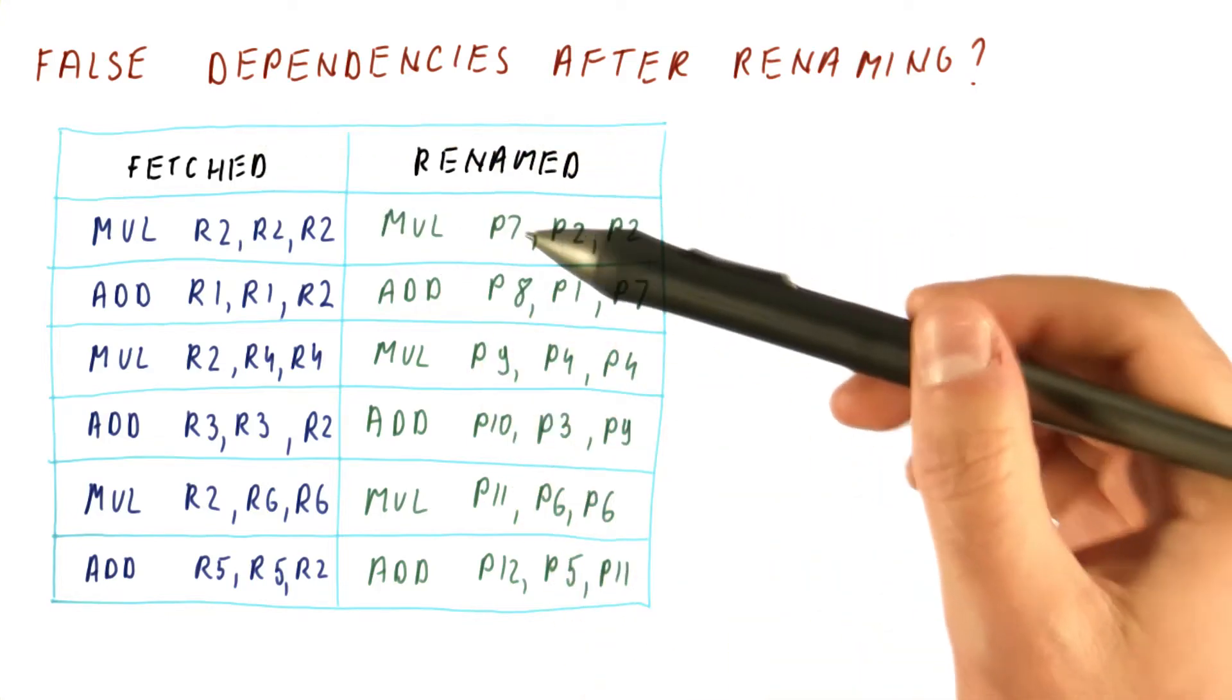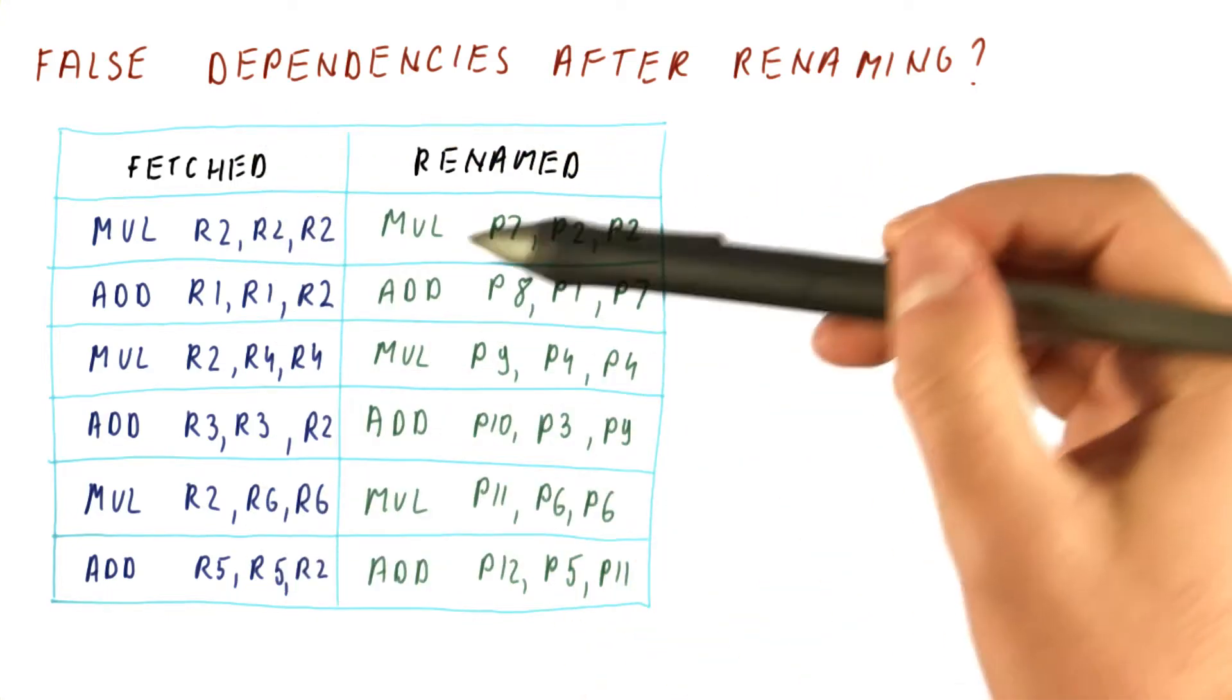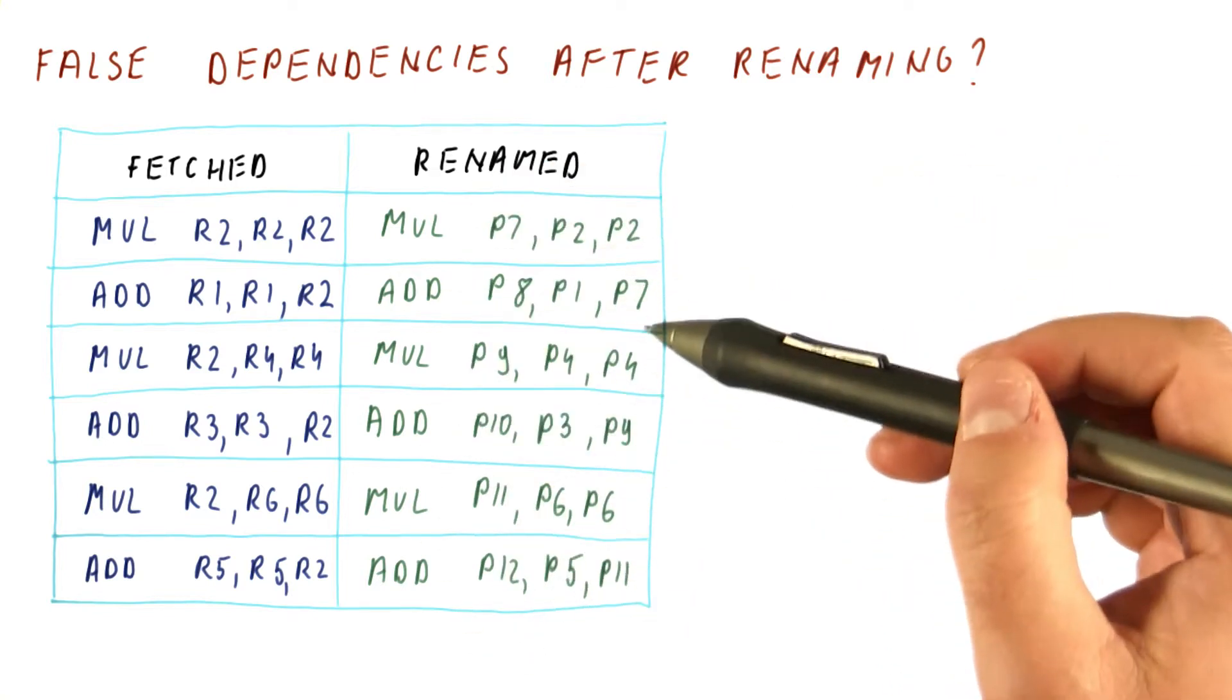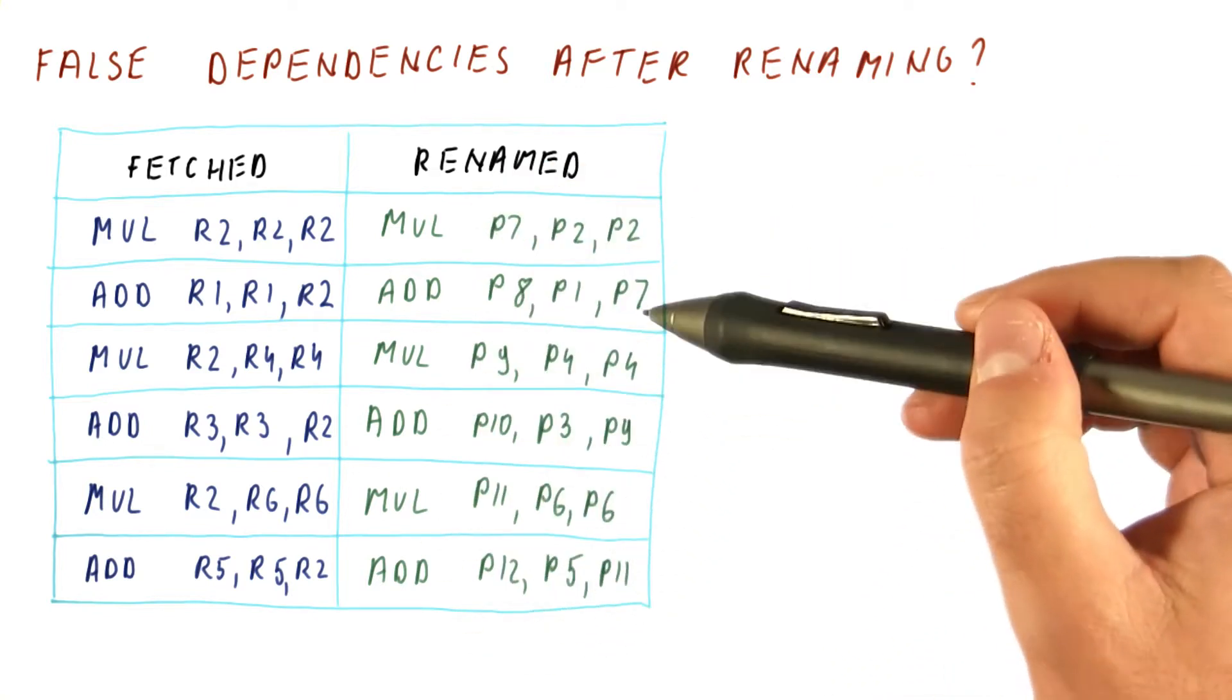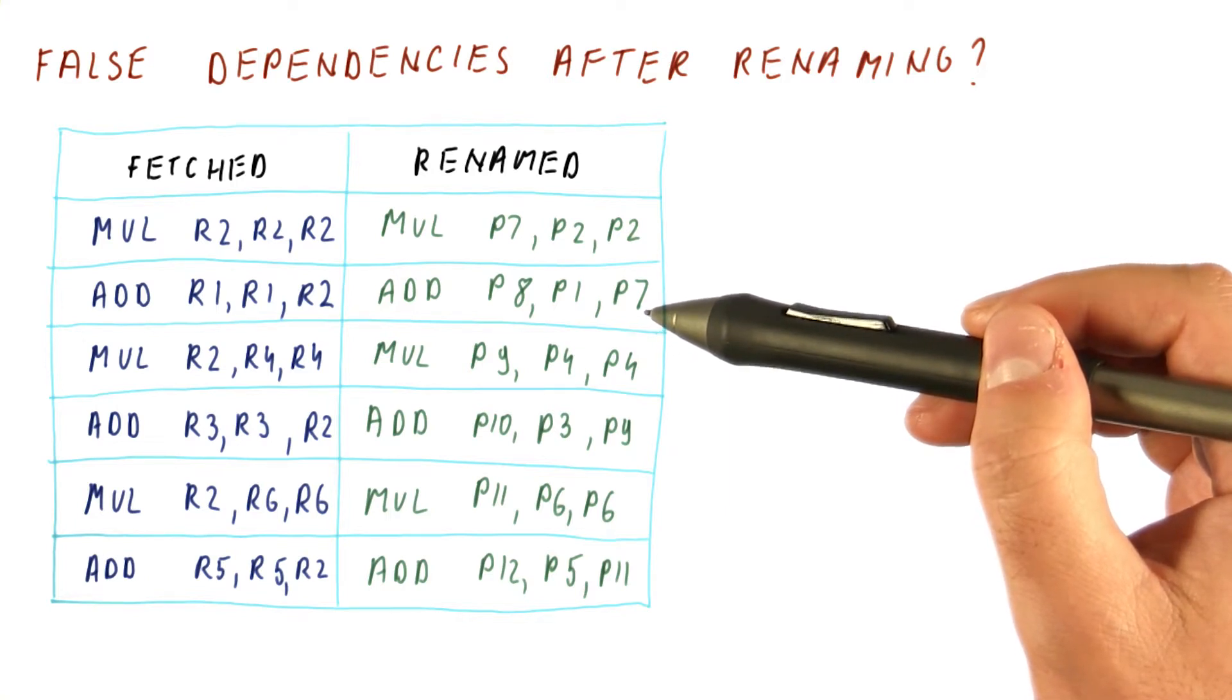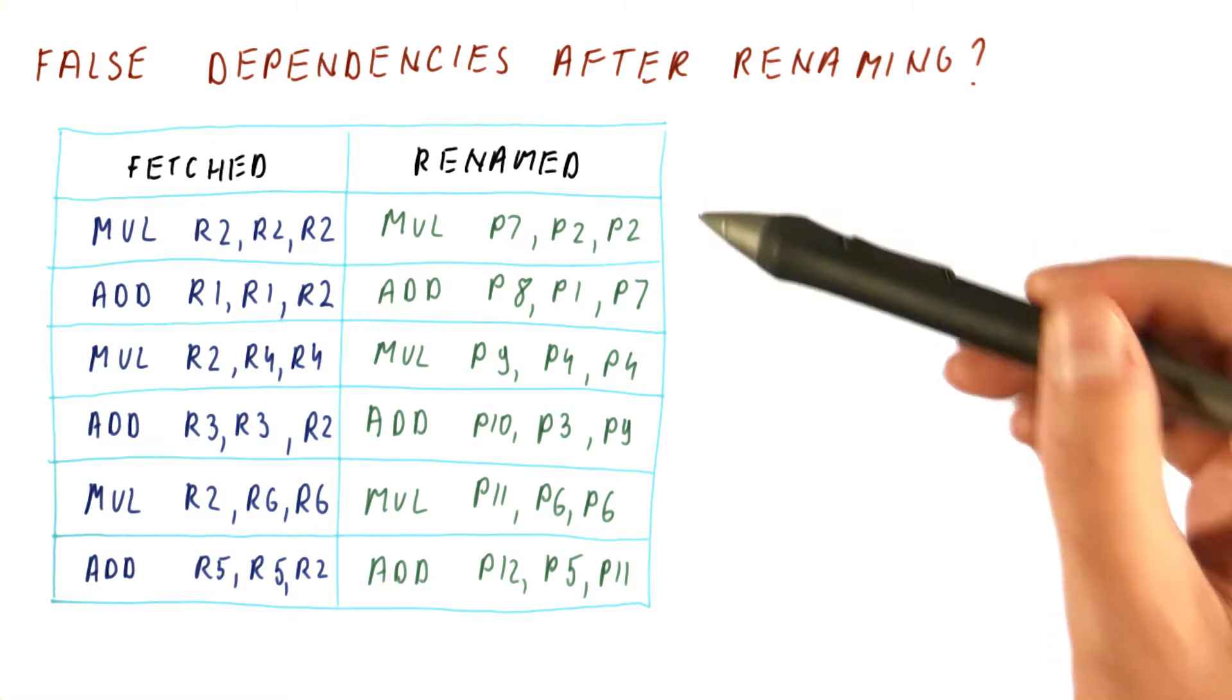So in the previous quiz we have seen that we can fetch these instructions, then we rename them to eliminate false dependencies. So let's see whether we have any false dependencies after renaming, and what does that do to our IPC, or instructions per cycle, which is the opposite of CPI.